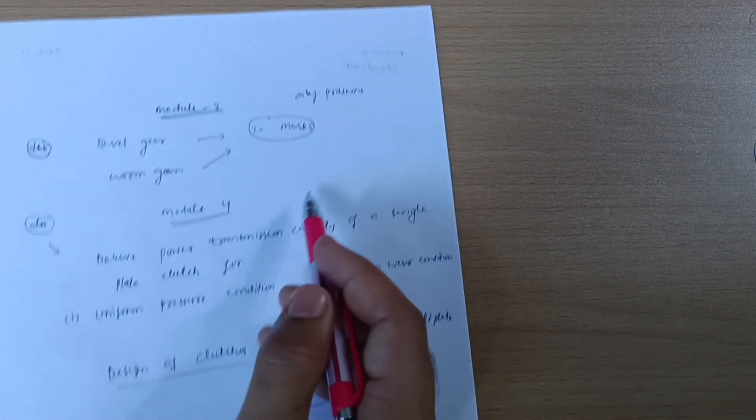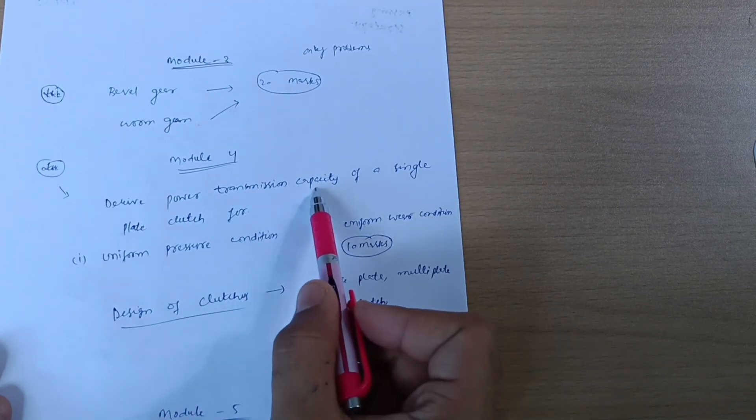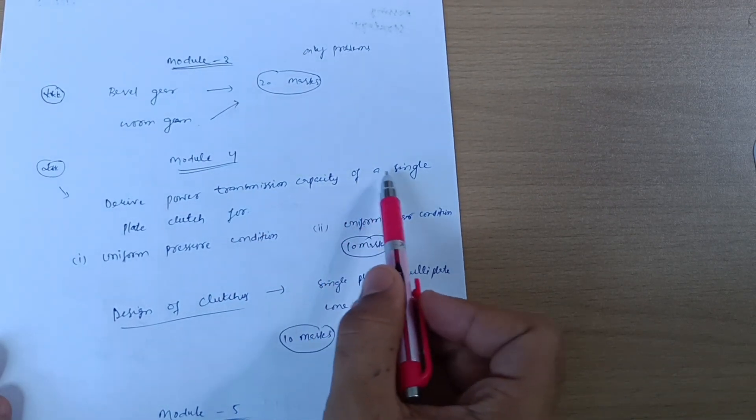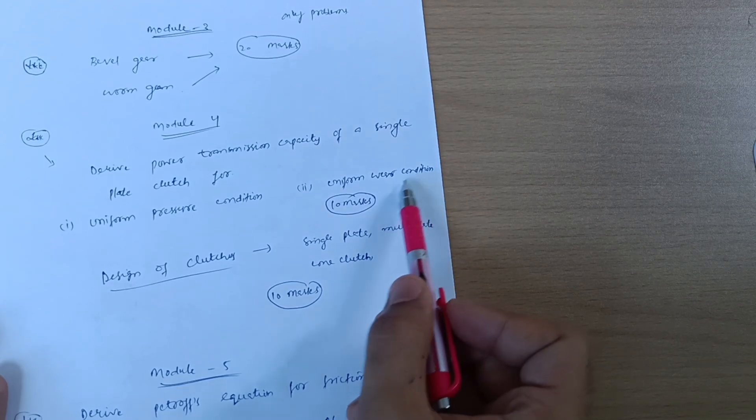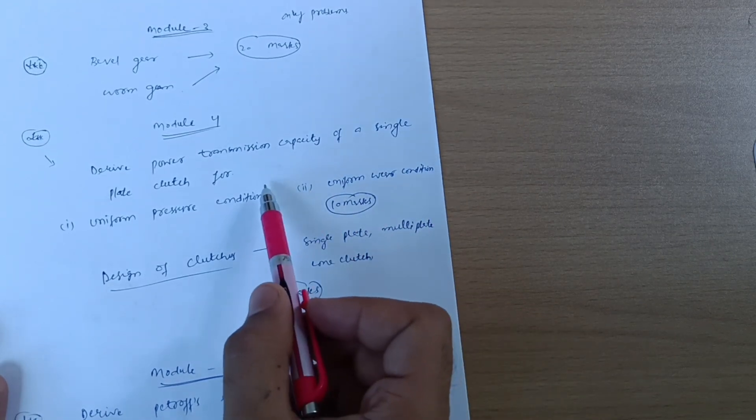Next is Model 4. Derive power transmission capacity of a single plate clutch for uniform pressure condition and uniform wear condition. This is also 10 marks fixed question.